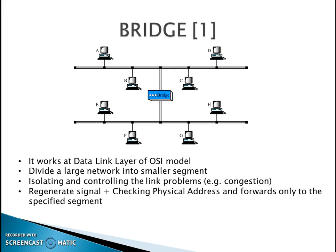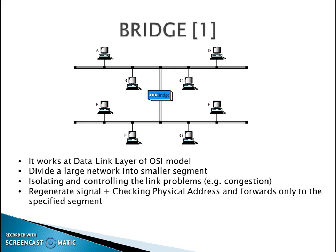The second device under study is the bridge. Bridge is a device which works at the data link layer of the OSI model. As seen from the diagram, a bridge divides a large network into smaller segments — in this case, segment 1 and segment 2. So a bridge is a connecting device that joins these two segments. Its main function is to isolate and control a particular link. It also regenerates the signal, checks the physical address, and forwards the data to the specified segment, making it an intelligent device.